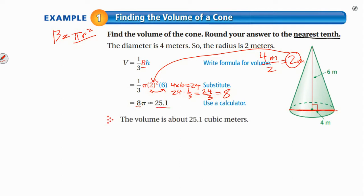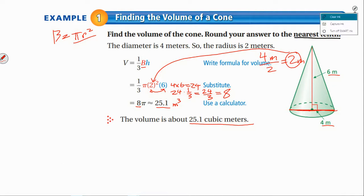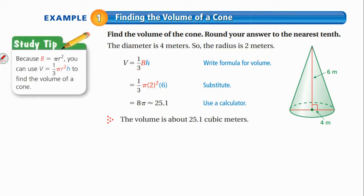The answer is not just 25.1, but 25.1 cubic meters, because our measurements were in meters. So this should be meters cubed or cubic meters. Make sure you put the units at the end of your answer. And of course, as we've talked about before, the base is equal to pi r squared, so make sure we have pi r squared in for what b actually is.